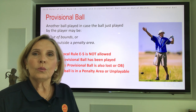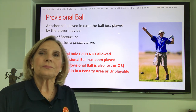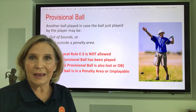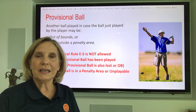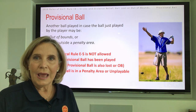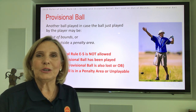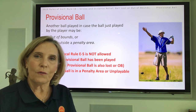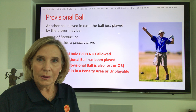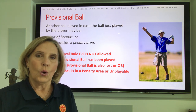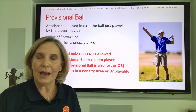This rule will allow us an additional form of relief for a ball that's lost outside the penalty area or out of bounds. It is a decision we must make before we leave the tee — will I play a provisional ball as before 2019, or will I go forward to search and then decide to use Model Local Rule E5? If your club, association, or championship has adopted this rule, you will be able to use it.